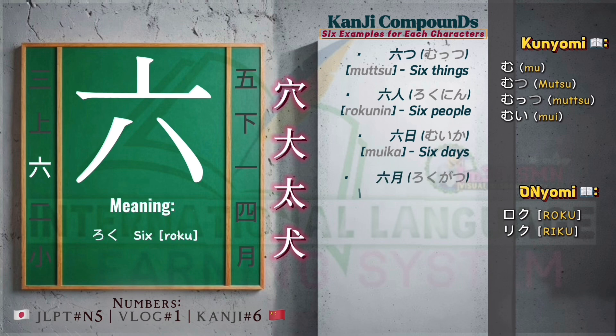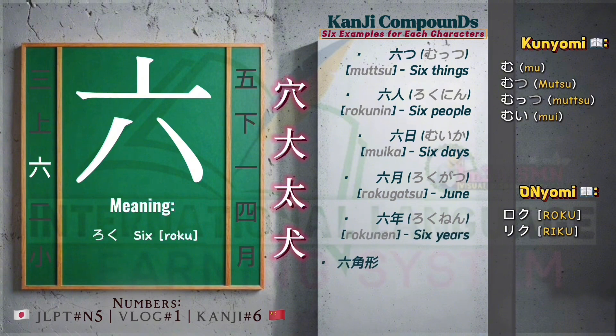Rokugatsu — June. Rokunen — six years. Rokkakkei — hexagon.